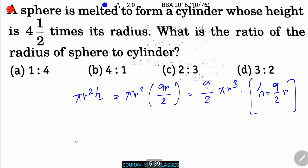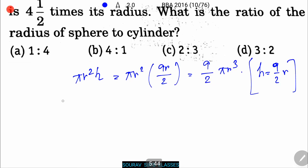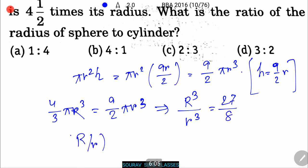Now, the volume of sphere equals the volume of cylinder. So we can write 4 by 3 pi R cubed capital R, that equals 9 by 2 pi r cubed small r. That implies R cubed by r cubed equals 27 by 8. That means R by r whole cubed equals 3 by 2 whole cubed. That implies R is to r equals 3 is to 2. So option D will be the right answer.